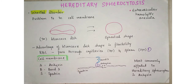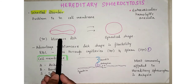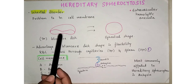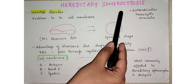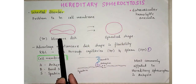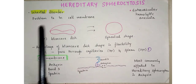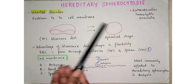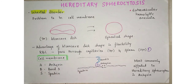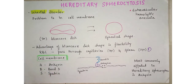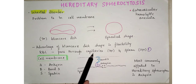Normally, RBCs are biconcave in shape. This biconcave shape has the advantage of being highly flexible. But in hereditary spherocytosis, the biconcave shape is transformed into a spherical shape. To understand why RBCs become spherical, we need to understand the normal cytoskeleton of the RBC. The normal RBC is biconcave, and the advantage is that it is flexible.